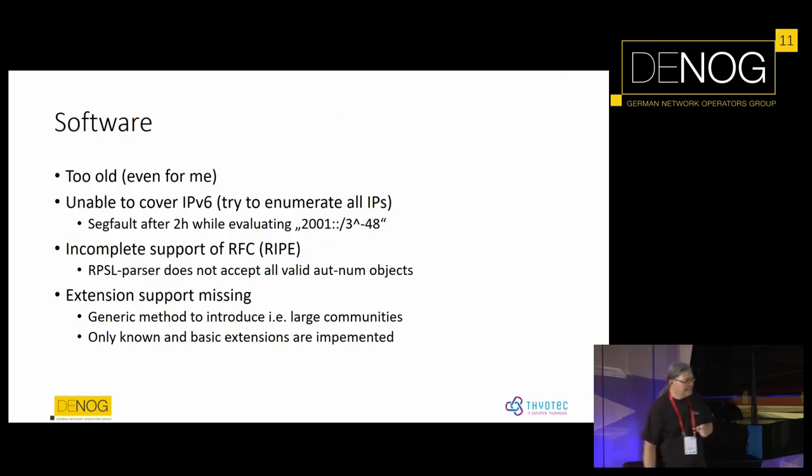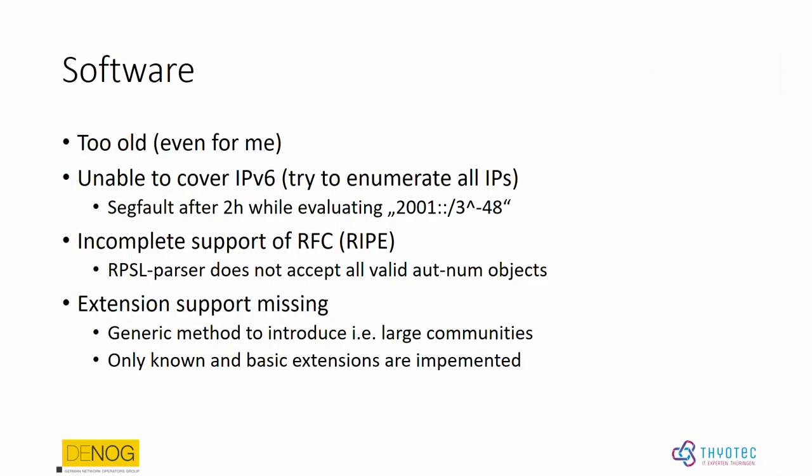How about the software? The software we have for processing RPSL is even too old for me. It doesn't run on the C64, but it's similar. If you try this, don't do it on IPv6, because the software is designed to enumerate all IP addresses in order to find ranges. If you try to set up an RPSL object and upload it to RIPE, it will not work because the RIPE parser is too limited. So put some of the definitions out and put them in the remarks section. RPSL is extendable, but nobody does the extensions — they're only implemented by hand, not in a generic way. So we can't use extensions. It's all bad.